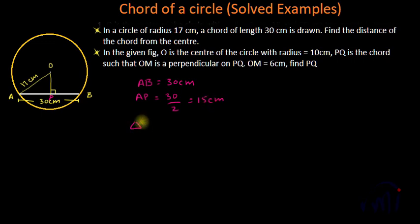And we know triangle OAP is a right angle triangle where angle OPA is 90 degrees, and we have to find the length OP. Since it is a right angle triangle, we can use the Pythagoras theorem. OA square will be equal to OP square plus AP square, or we can say OP square will be equal to OA square minus AP square.